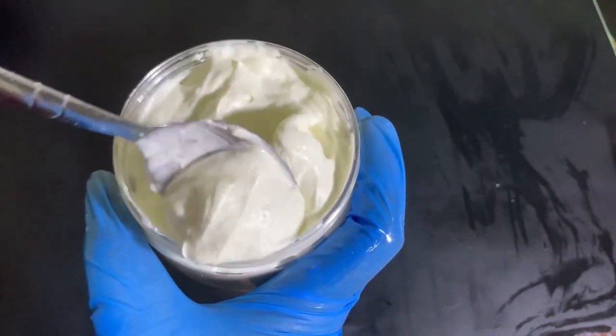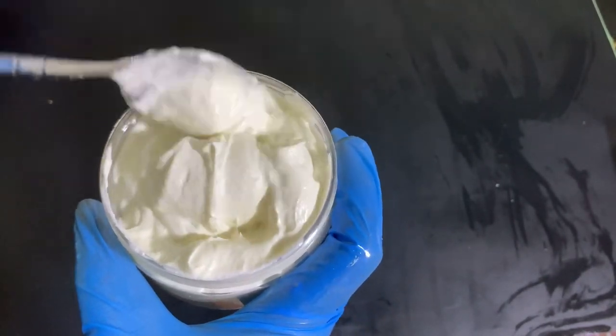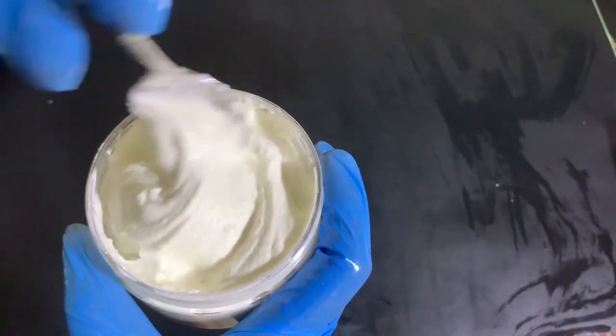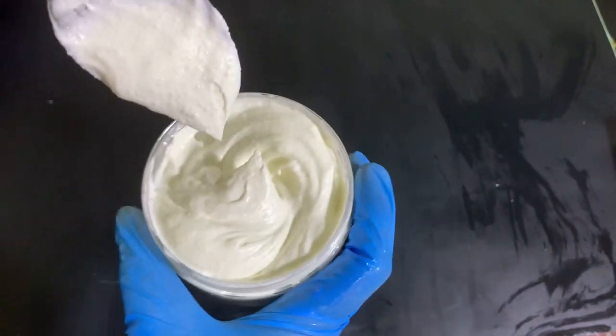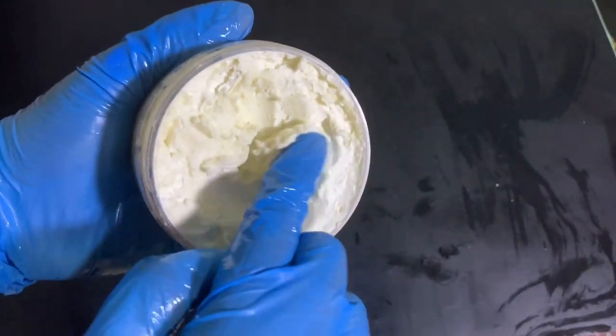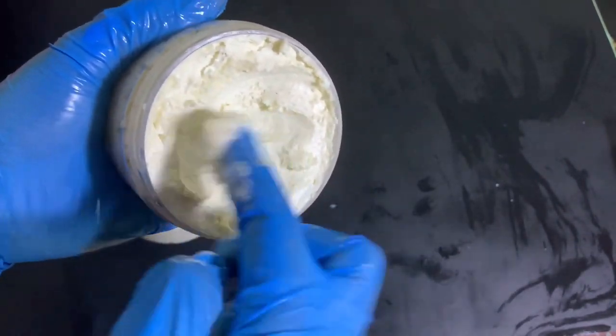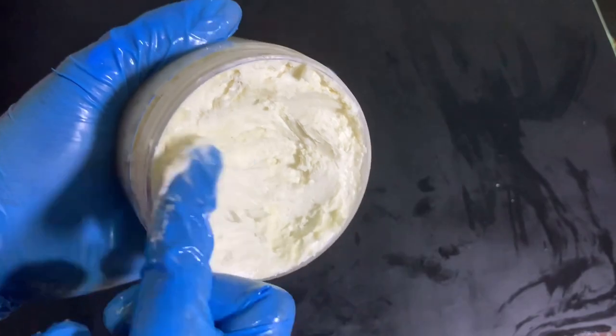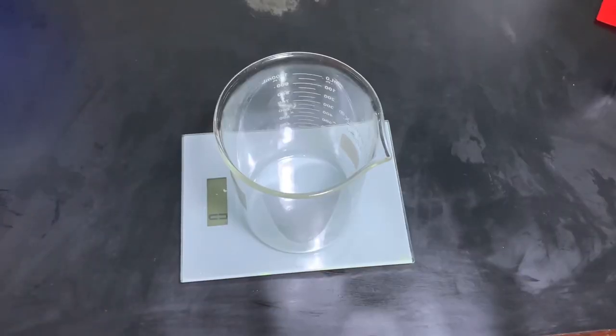When you make a body butter, it looks fluffy and light, like it's going to stay that way. But a couple of weeks later it becomes this hard, thick butter. You really do not like this consistency. And sometimes when you ship it, it melts on the way.